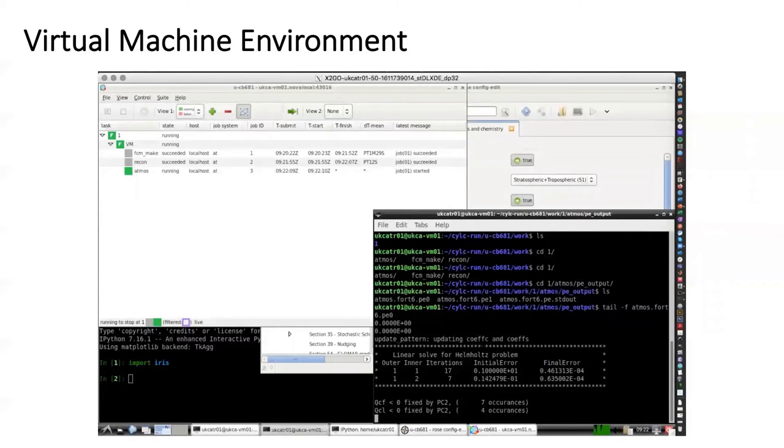This system also includes the Met Office testing framework and is able to test whether new code affects the model results and if the new code conforms to the required coding standards. This means that users who have developed improved UKCA functionality can become familiar with the Met Office development practices with an aim to encourage this code to be committed back to the trunk and become available for all users.